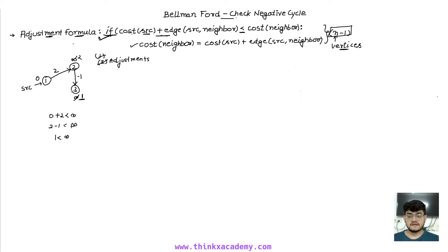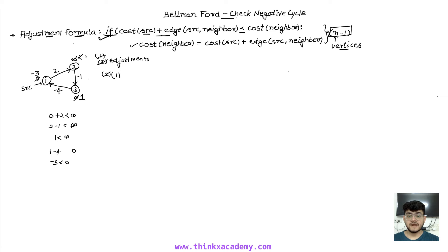Let's see what a negative cycle is. Suppose we add an edge from node 3 back to node 1 with weight minus four. After the first iteration, checking the edge 3 to 1: one plus (minus four) is minus three, which is less than zero, so we update the cost of node 1 to minus three. In the second iteration: minus three plus two is minus one, less than two, so node 2 updates to minus one. Then minus one minus one equals zero for node 3, and zero minus four equals minus four, updating node 1 to minus four.